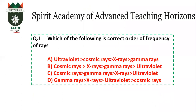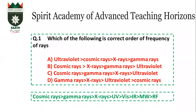The first question is: which of the following is the correct order of frequency? Remember that frequency and energy are directly proportional — the more frequency, the more energy. Looking at the radiation frequency order, it goes: cosmic rays, gamma, X-rays, UV, visible, IR, microwave, and radio frequency. So the answer will be C.